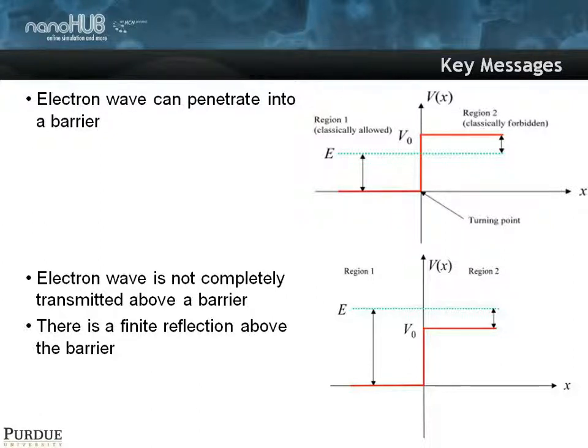The key messages are that, number one, electron waves can penetrate into a barrier with a certain decay length, and that electron waves are not completely transmitted over the barrier, and that there is a finite reflection above the barrier. Those are the key concepts to take away. The math I'm sure you've seen in your basic quantum mechanics course. I want to drive home that those are the key messages to take away for devices.